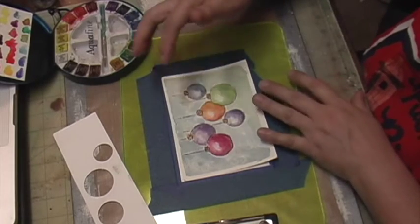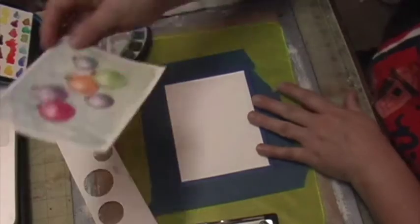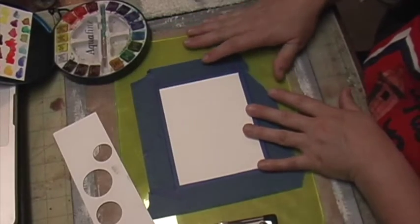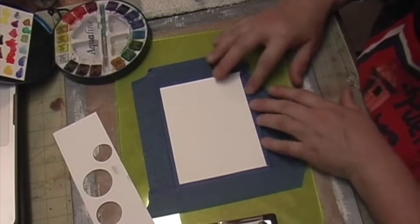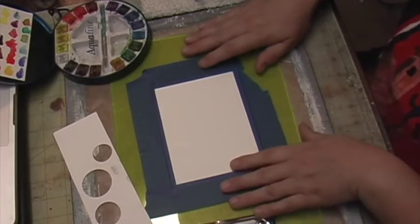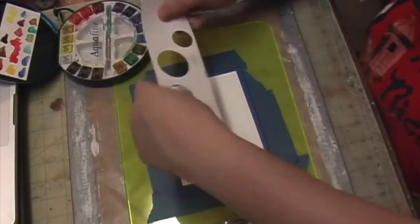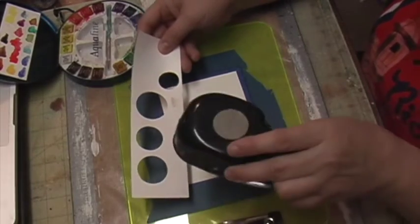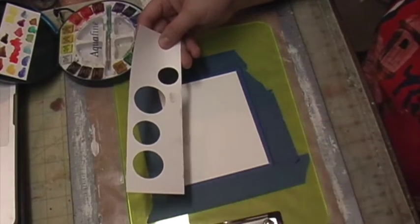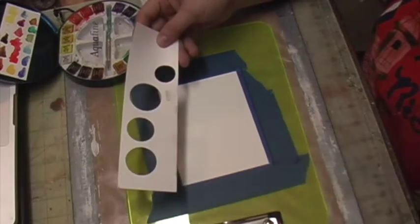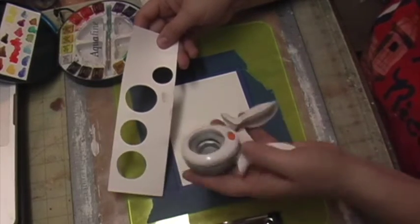I'm using 140 pound cardstock and this is Canson cardstock and I put it on this panel here. What you need to do is punch out some circles using your punches. I got a couple of punches here so I have different sizes of punches. Just punch them out.